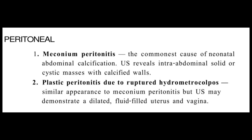Fetal or neonatal liver calcification differentials include peritoneal causes, parenchymal causes, and vascular causes. In peritoneal causes, meconium peritonitis is one of the major causes — you will see fluid within the uterine cavity having calcific dense foci, and if the fetus inhales that liquid, calcification will likely occur within the liver parenchyma as well. The second cause is plastic peritonitis due to rupture hydrometrocolpos, similar to meconium peritonitis, but on ultrasound you will see a dilated fluid-filled uterus with the vaginal area also fluid-filled with tiny dense calcific foci.